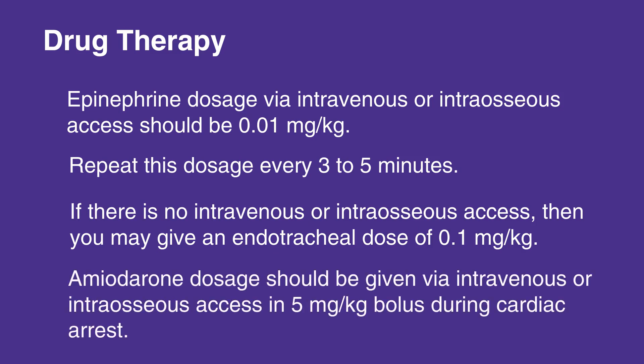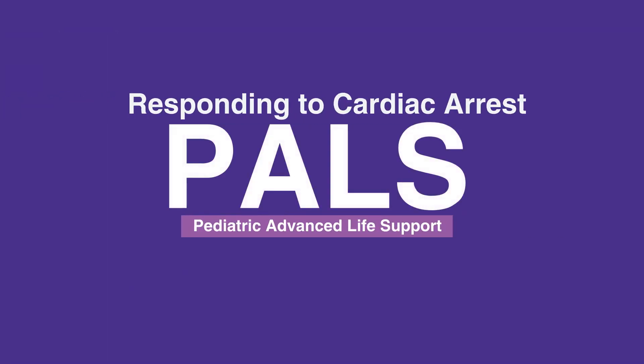Amiodarone dosage should be given via intravenous or intraosseous access in a 5 mg per kilogram bolus during cardiac arrest. You may repeat this up to 2 times for refractory VF or pulseless VT. This concludes our lesson on responding to cardiac arrest. Next, we will review post-resuscitation cases.